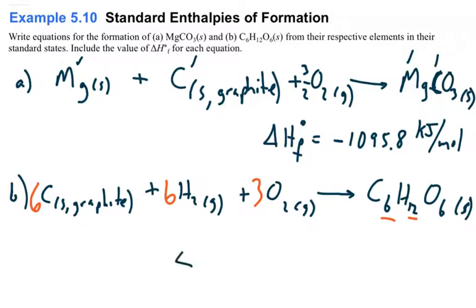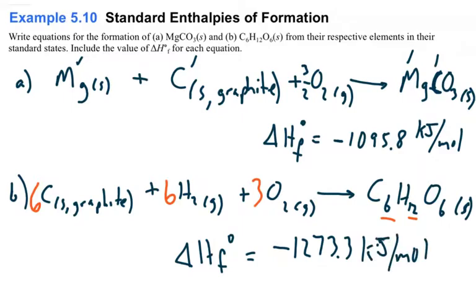Now, the delta H of formation for glucose, and this, again, comes from a table, is negative 1,273.3 kilojoules per mole. So, these are the first two that we have. I have two more examples that I'm going to show you.